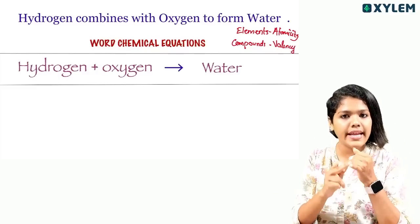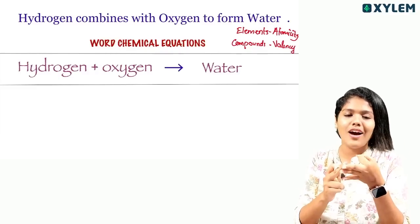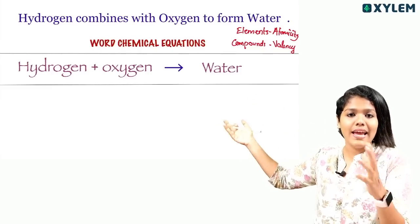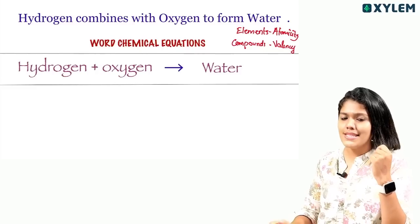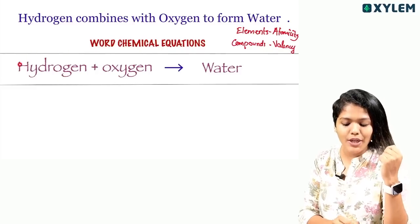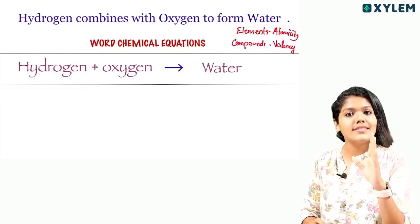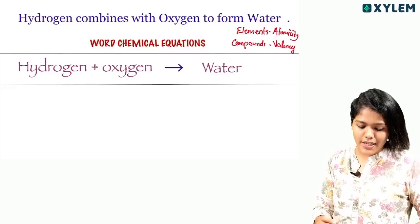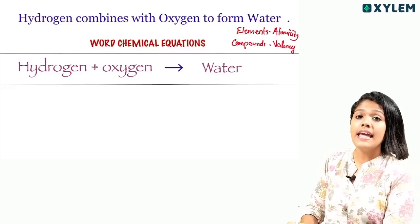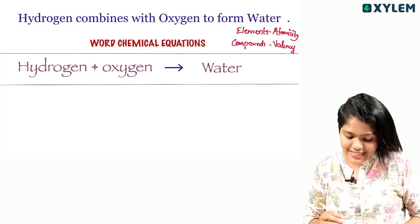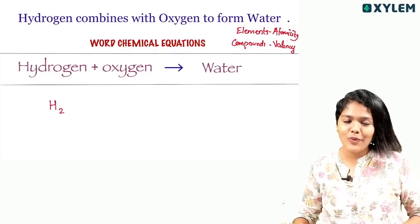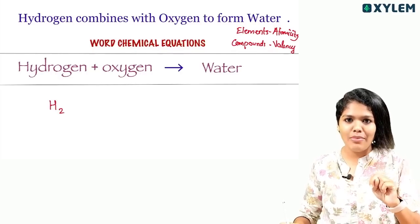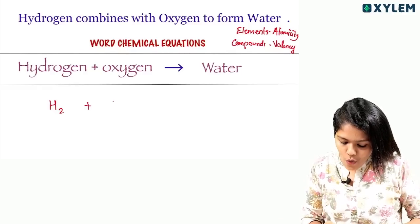Element — atomicity basis. Hydrogen is an element. Hydrogen is diatomic, so we write H2. Oxygen is also an element. Oxygen is diatomic, so we write O2.